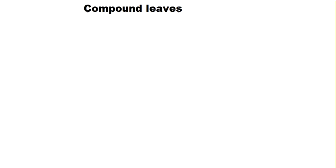In this video we are going to learn about compound leaves. Let's say this is a branch of a tree where a general leaf is going to grow. The type of margin this leaf possesses is called an entire leaf margin, as there are no incisions in this margin.